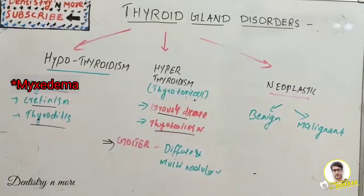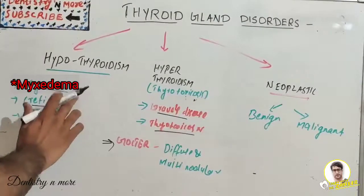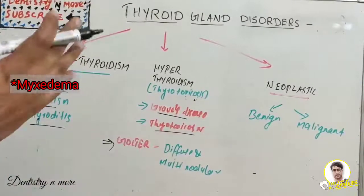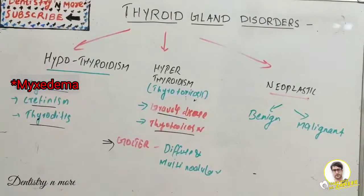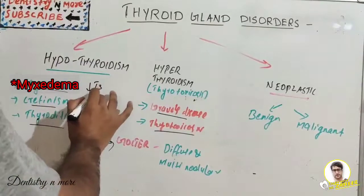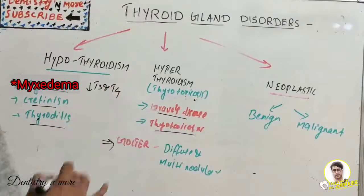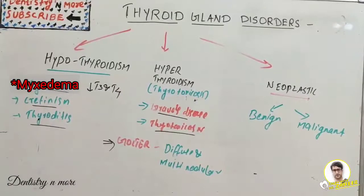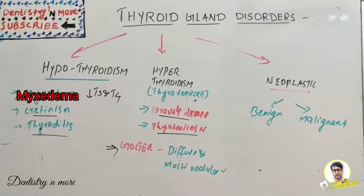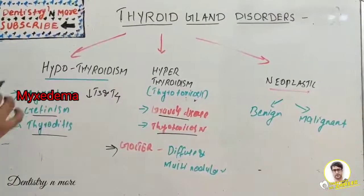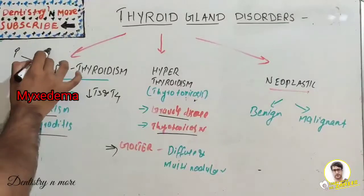This is very important from an exam point of view — each one can be asked as a short note, and the entire thyroid gland topic might be a long essay. We will directly start from hypothyroidism, which results from reduced levels of T3 and T4. The causes can be classified into primary or secondary reasons.